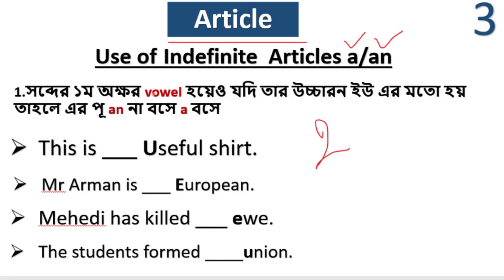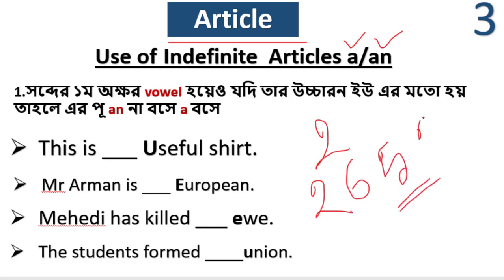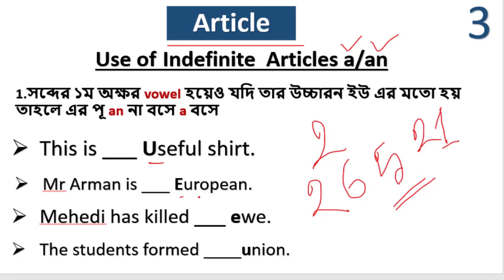This is the use of indefinite article. You get a bunch of A and AN. For example, this is a useful shot. I'll take a look — I'll take a very useful example to show you.